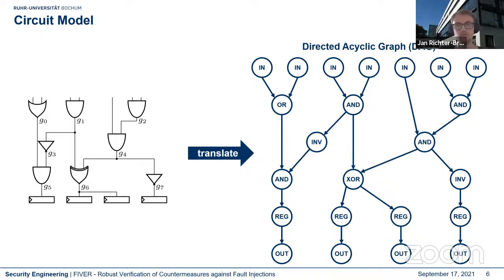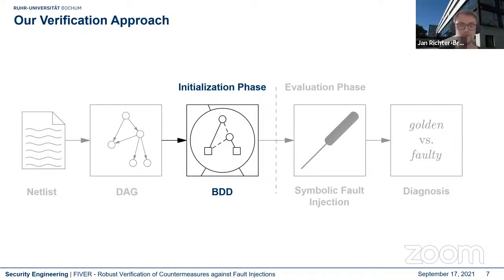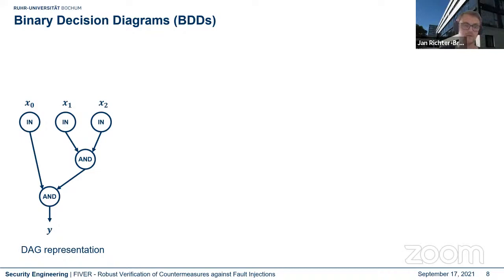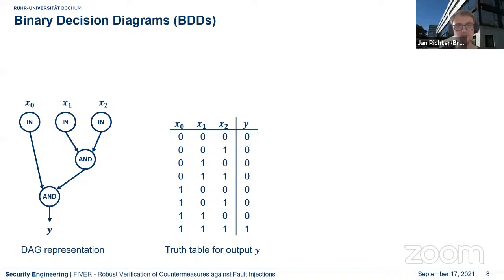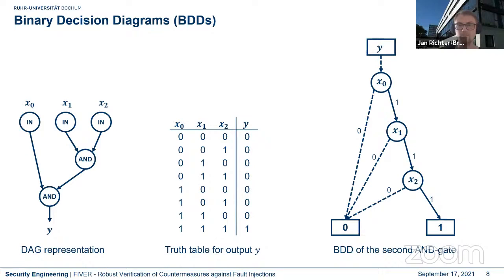Each node in the DAG is evaluated with associated Boolean functions using Binary Decision Diagrams (BDDs). For example, a simple function y can be represented either by a truth table or — as done in FIVER — by a BDD. The BDD represents function y in a tree form: we first evaluate x0, and if x0 is zero we jump directly to zero; if it's one we evaluate x1, and so on. This is done for each node in the DAG, forming our circuit model.